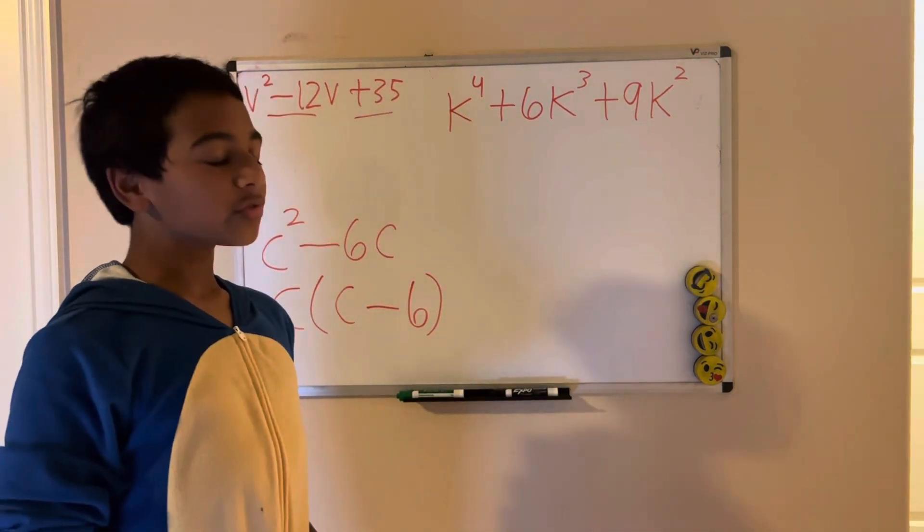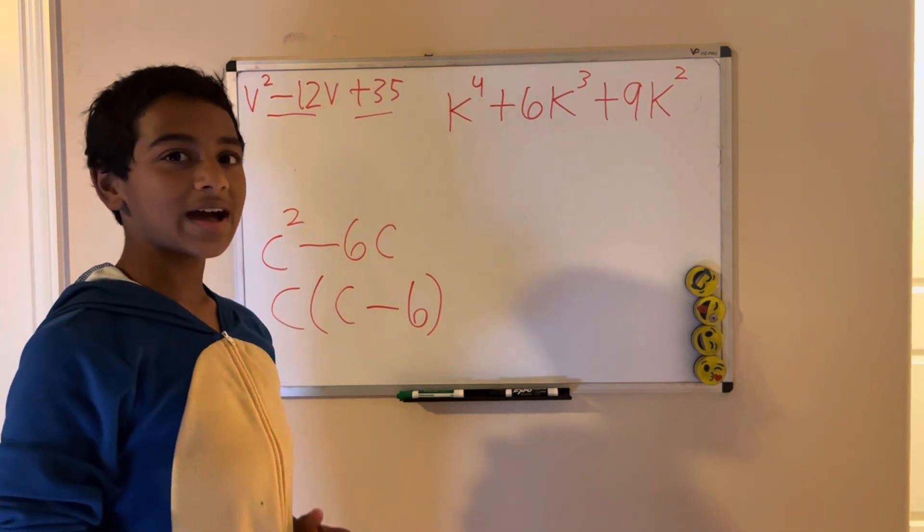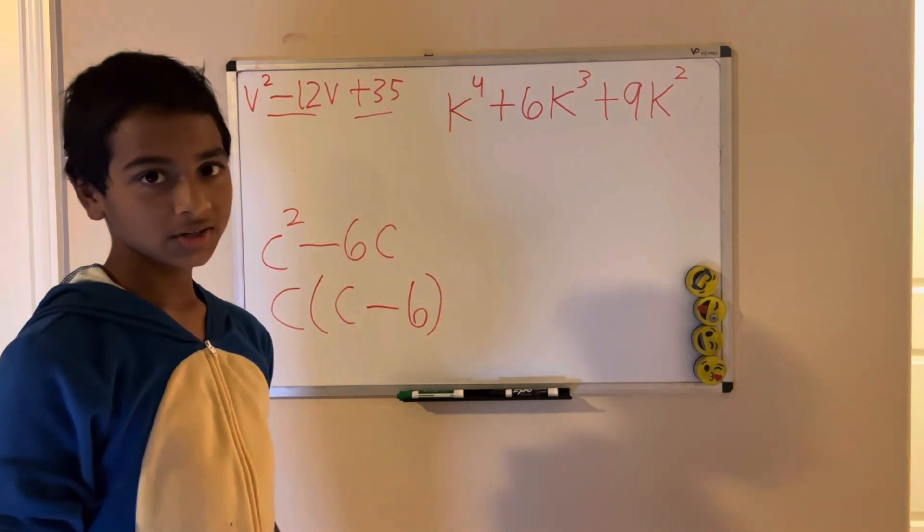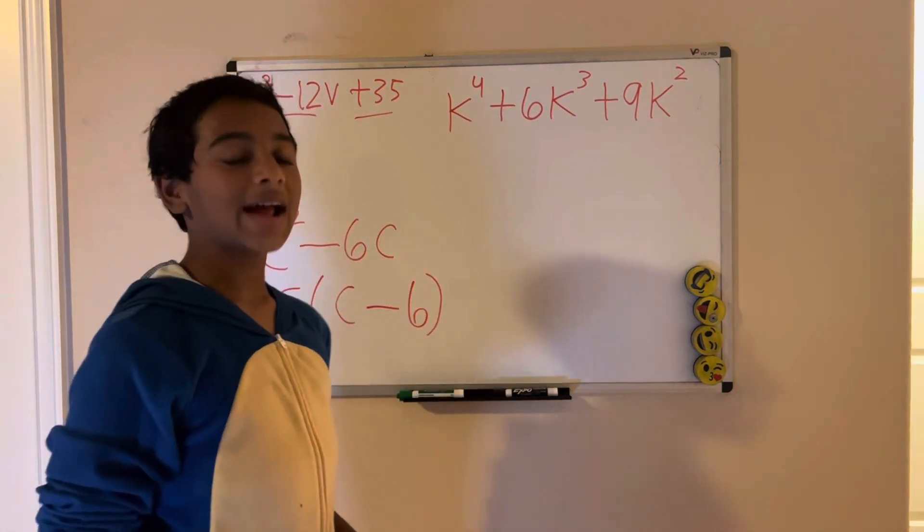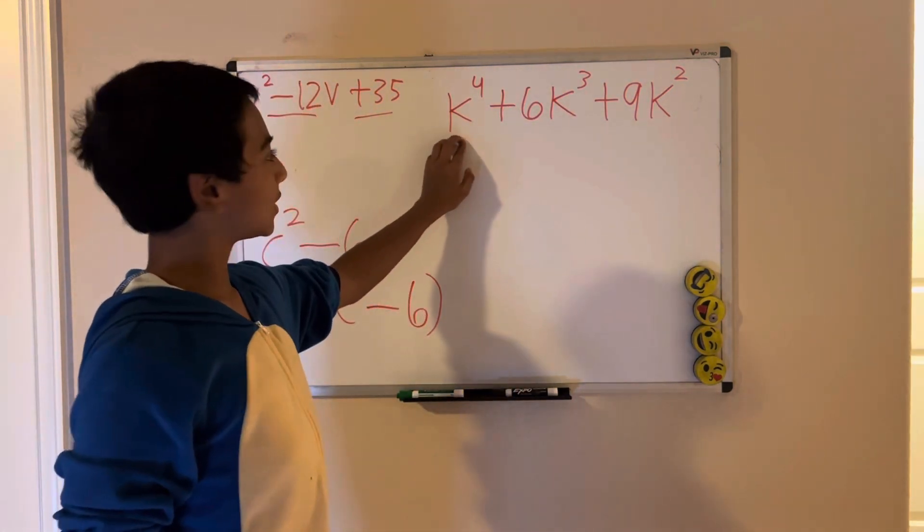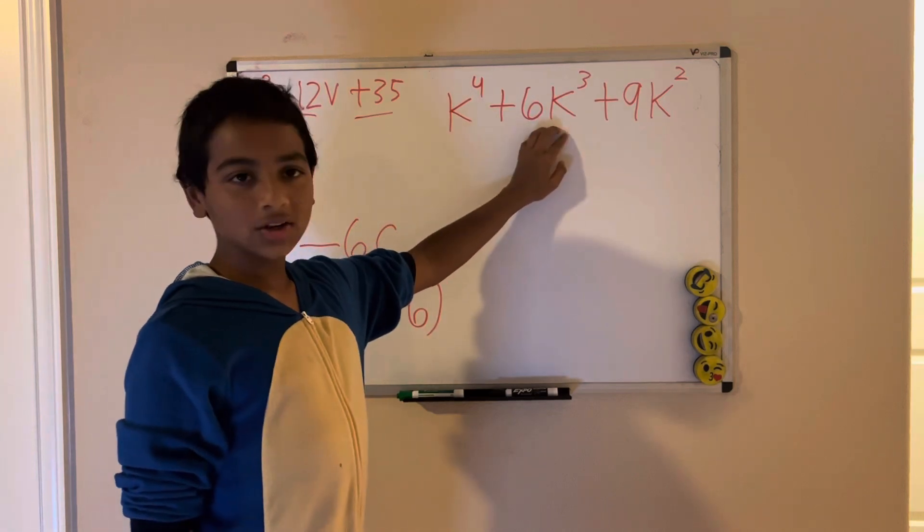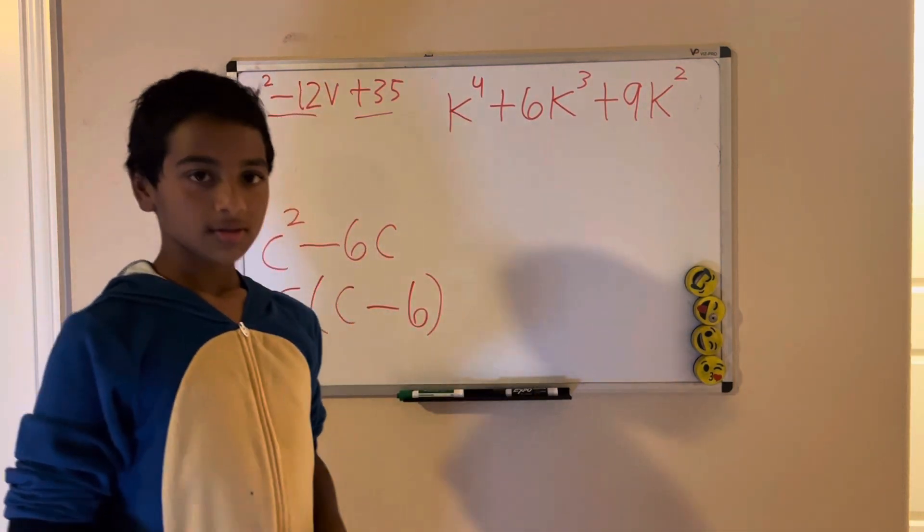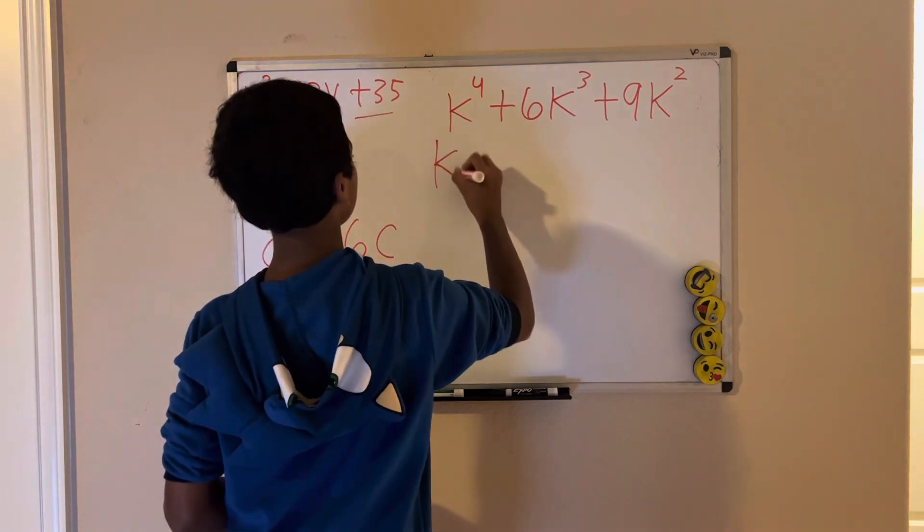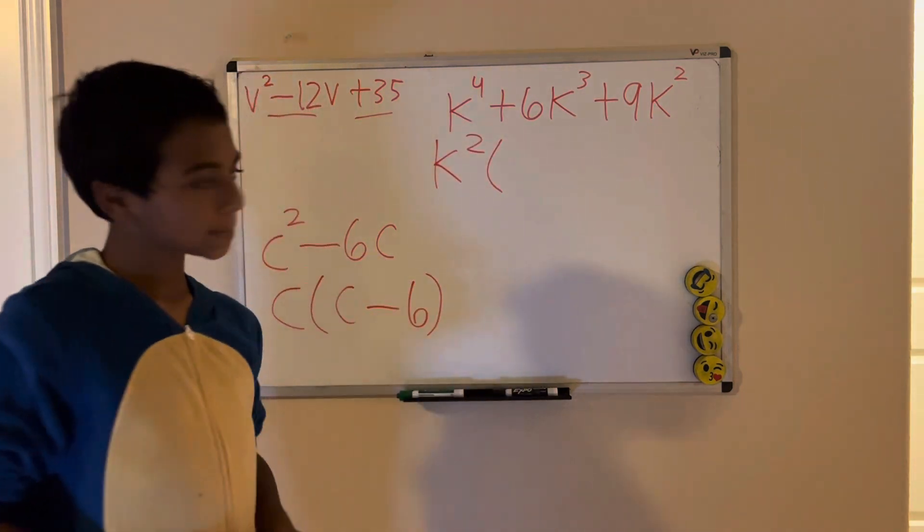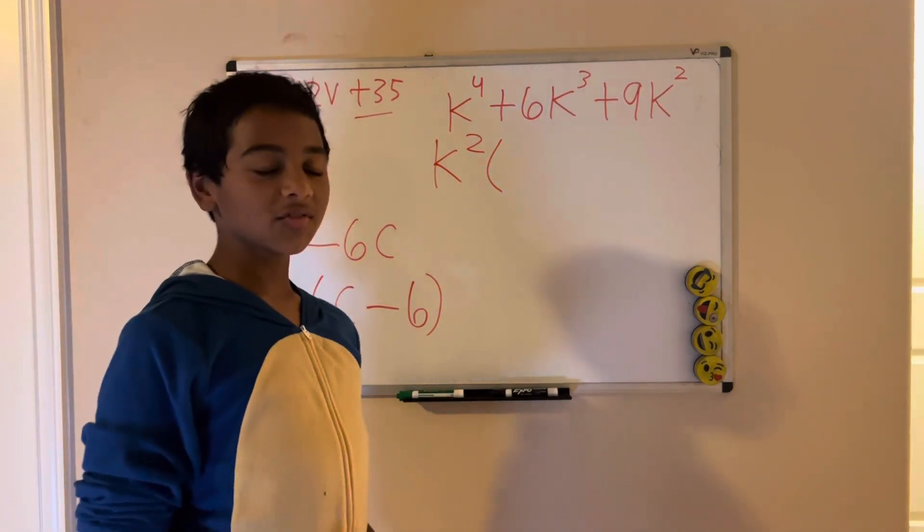We need to figure out the GCF, or the greatest common factor. In this case, it's k squared, because k squared can be divided by this, k cubed, and k squared. So we'll write k squared times, now we need to divide.